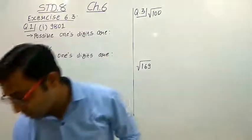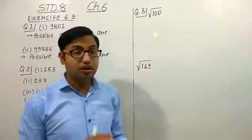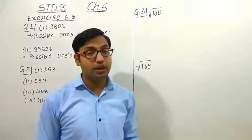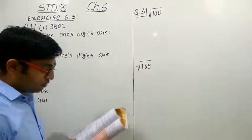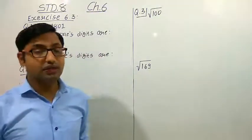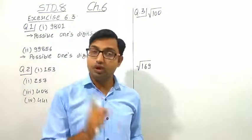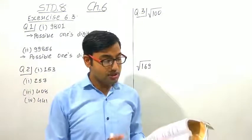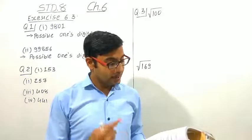So what is the first question? The first question is: what could be the possible ones digit of the square root of each of the following numbers? Here we have given some square numbers, and we have to find out what digit will appear at the ones place when we apply the square root to that number.